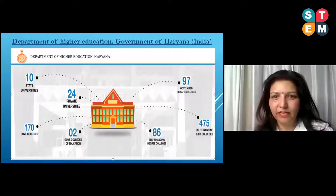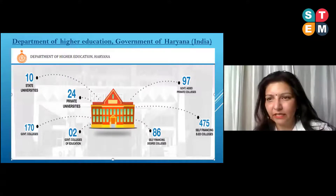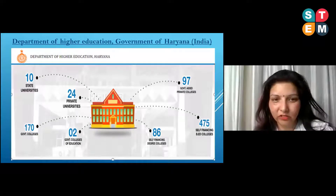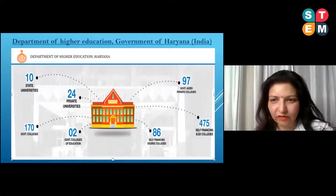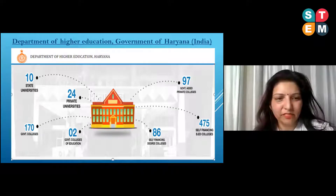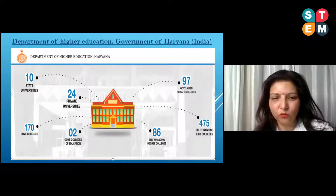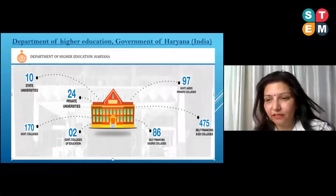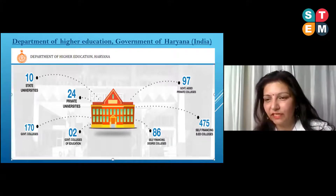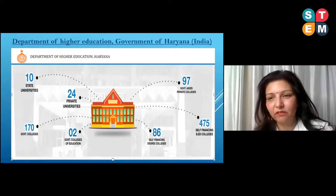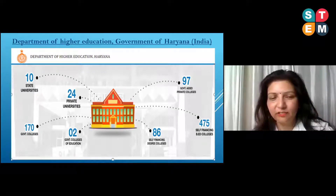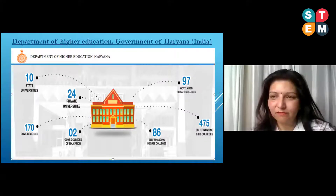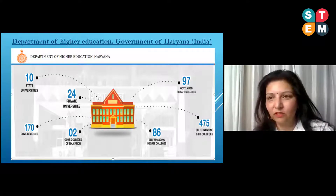The Department of Higher Education, Government of Haryana, is an umbrella that comprises 10 state universities, 24 private universities, 170 government colleges, government colleges of education, 86 self-financing degree colleges, 475 self-financing B.Ed colleges, and 97 government-aided private colleges all under the same umbrella, and our jobs are transferable — we can be transferred from one college to another.